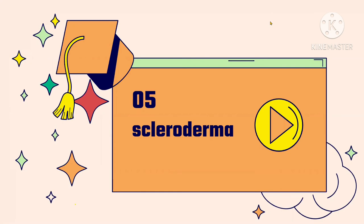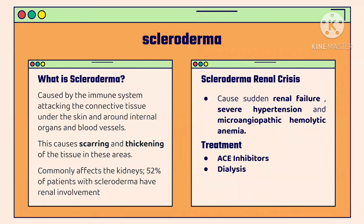Scleroderma is an autoimmune disease that attacks connective tissue under the skin and around internal organs and blood vessels, causing scarring and thickening. It commonly affects the kidney — statistically, 52% of patients with scleroderma have renal involvement. Scleroderma renal crisis can cause sudden oliguric renal failure, microangiopathic hemolytic anemia, and severe hypertension due to small vessel occlusion. Treatment requires aggressive blood pressure control with ACE inhibitors and dialysis to improve survival and restore renal function.